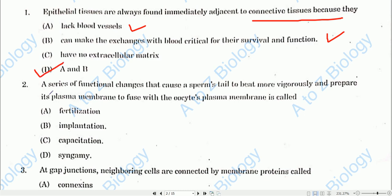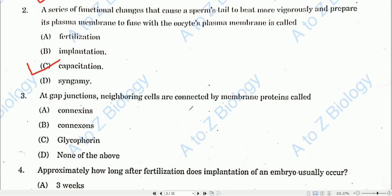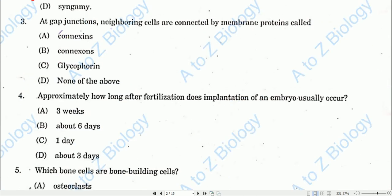Question number two: A series of functional changes that cause a sperm's tail to bend more vigorously and prepare its plasma membrane to fuse with the oocyte's plasma membrane is called capacitation. So option C will be the correct one.